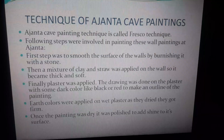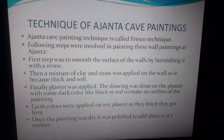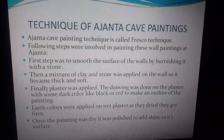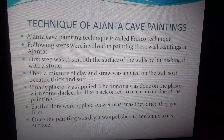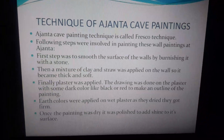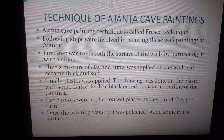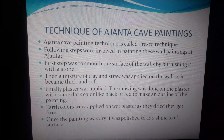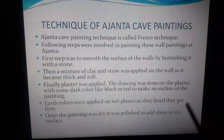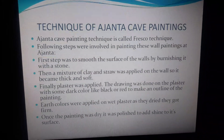An outline of the painting was made using a dark color like black or red. Then earth colors were applied on the wet plaster; as they dried, they got firm and fixed to the wall. Once the painting was dry, it was polished once again to add shine to its surface. These were all the steps involved in the Ajanta cave painting technique.